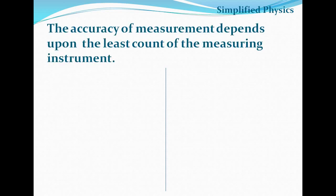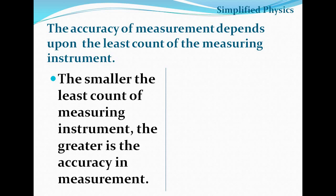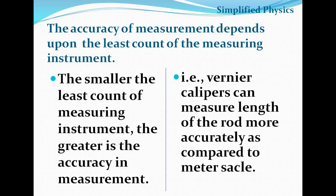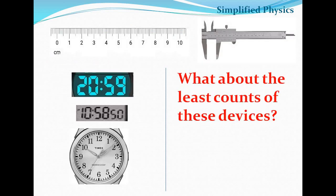The accuracy of the measurement depends on the least count of the measuring instrument. If the least count of a device is smaller, it can measure more accurately. For example, Vernier calipers can measure more accurately than a meter scale, because the meter scale has a larger least count compared to Vernier calipers.